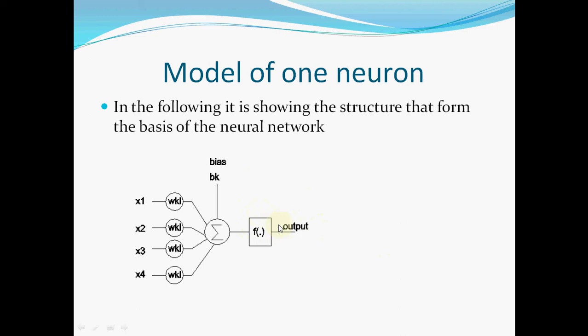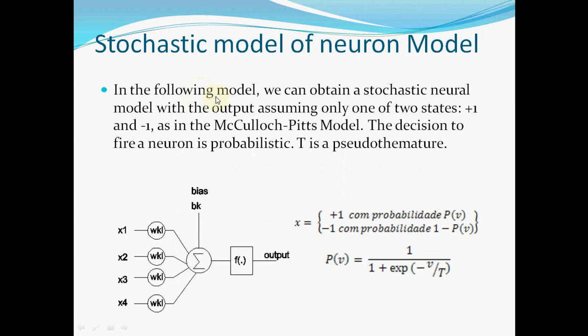There is also a stochastic model of the neural model. We can obtain a stochastic neural model with the output assuming only one of two states: plus one and minus one, as in the McCulloch-Pitts model. The decision to fire the neuron is probabilistic. T is a pseudo-temperature parameter.